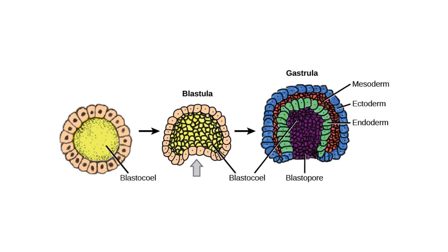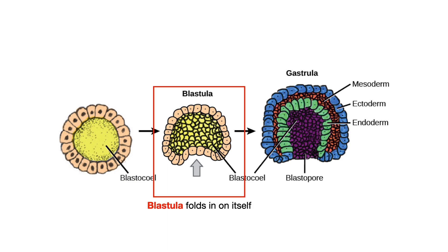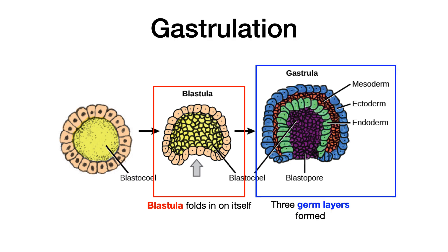The important thing to note is that you have something called a blastula, and over time that blastula will sort of fold into itself. In doing so, the blastula will give rise to a blastopore. For the purposes of nervous system embryology, we don't really care about the blastopore because that goes on to form a cavity for the GI system. But what we do care about is that after the blastula folds into itself, we get the formation of three germ layers: the endoderm, the mesoderm, and the ectoderm.